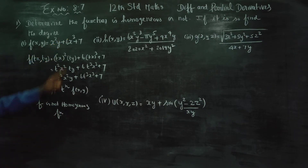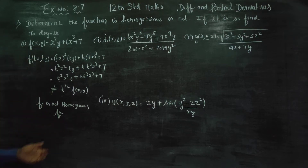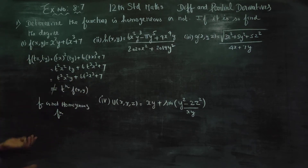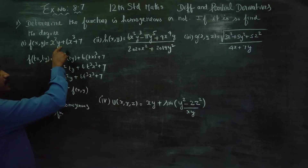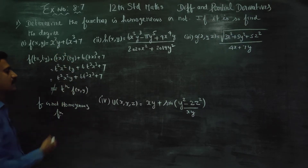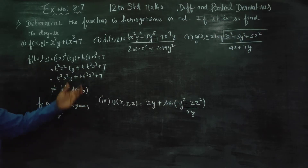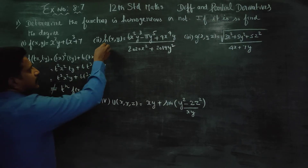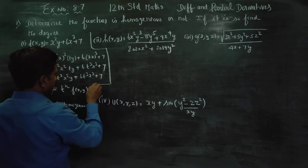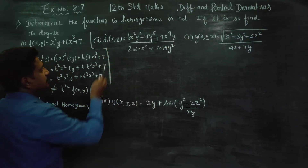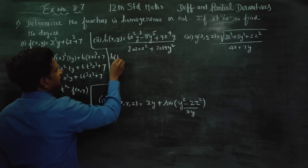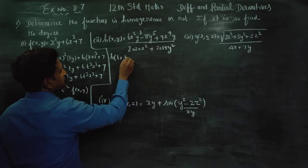Whether the given function is homogeneous or not: this function f is not homogeneous, because what is coming from here — the original sum is repeating but it is not equal to t power n times lambda x, lambda y. That is the second sum, h of tx, ty. Substitute.